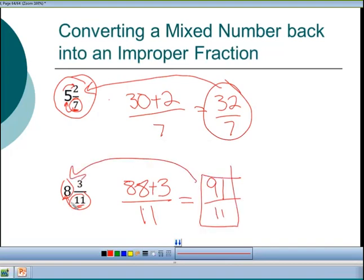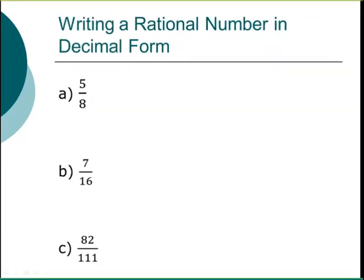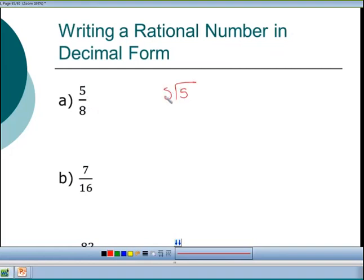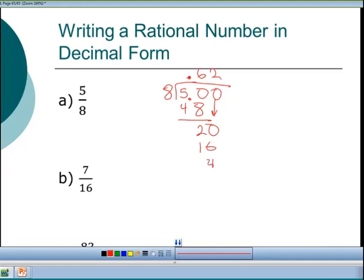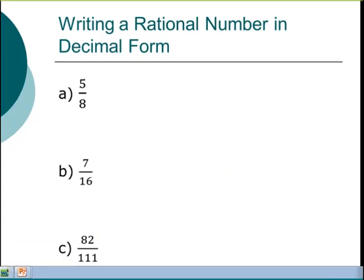Writing a fraction in decimal form using long division: for 5/8, put the decimal point and zeros. How many times does 8 go into 50? Six times, since 6×8 = 48, with a remainder of 2. Bring down a zero: 8 into 20 goes twice, remainder 4. Bring down another zero: 8 into 40 goes 5 times. So 5/8 = 0.625. You can use a calculator for the same result.